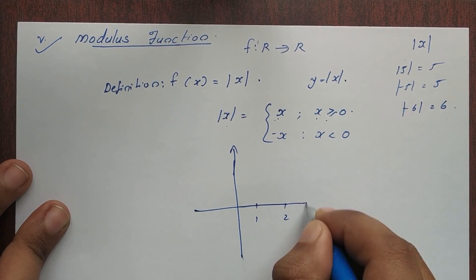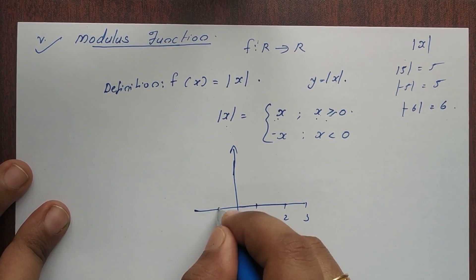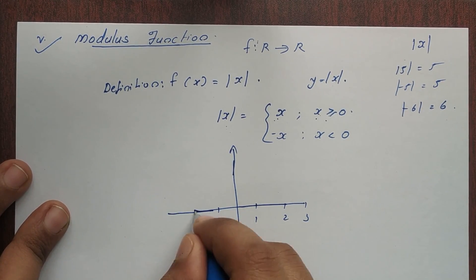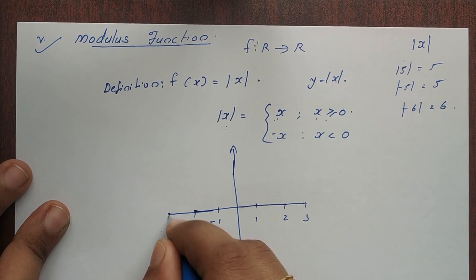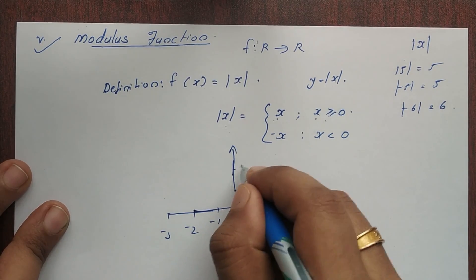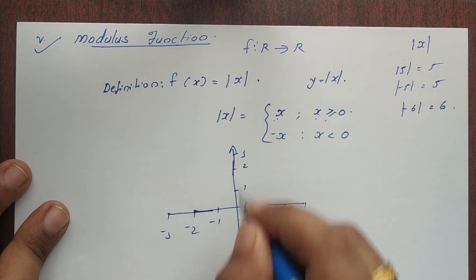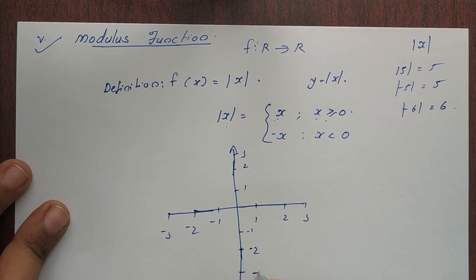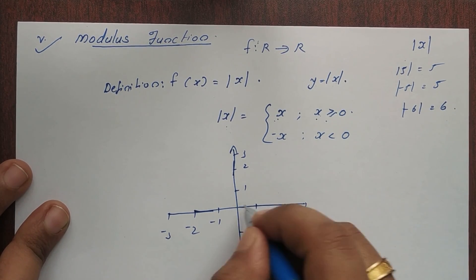On the axis: 1, 2, 3 and minus 1, minus 2, minus 3. On the other axis: 1, 2, 3 and minus 1, minus 2, minus 3.